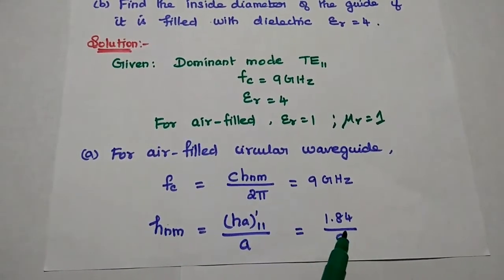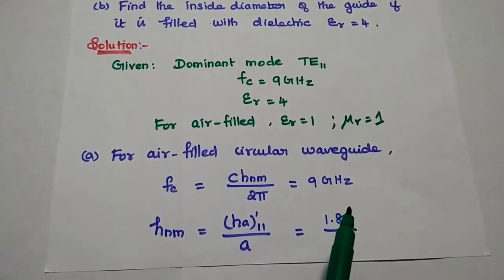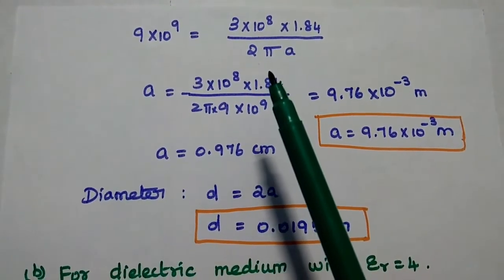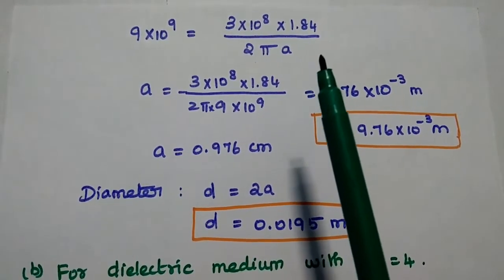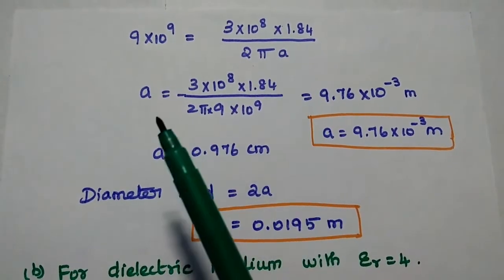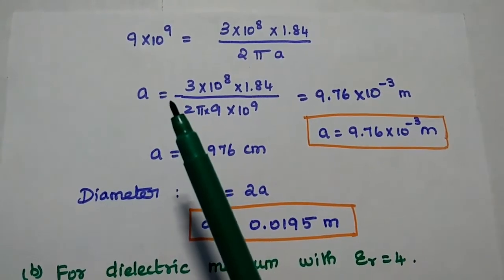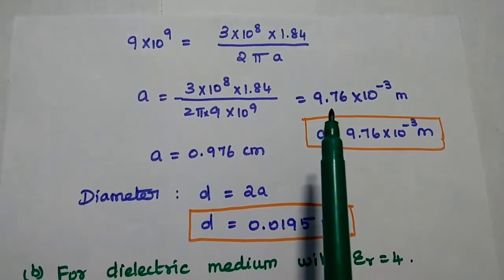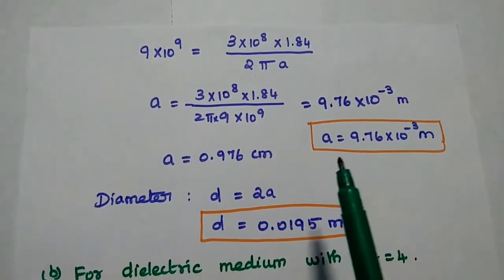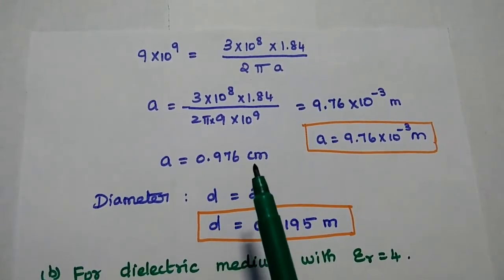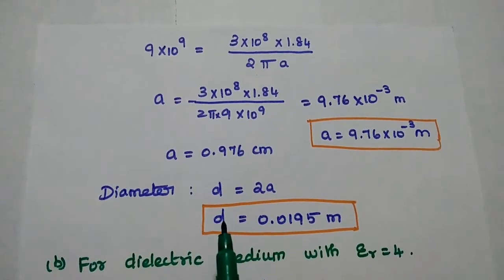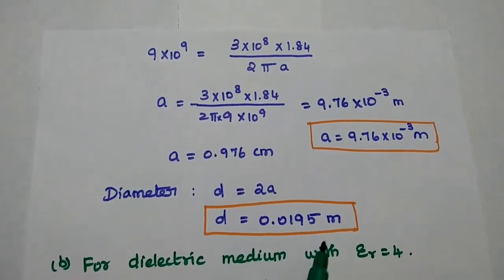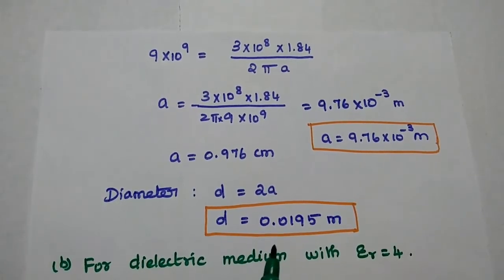But we are going to find out the diameter, which is equal to 2 × A. We can get the answer as 0.0195 m. This is the diameter of the given circular waveguide for air-filled material.